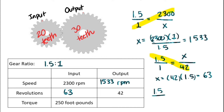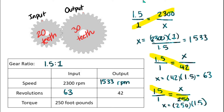Looking at torque: gear ratio equals output torque over input torque. We put input on the bottom. Our output torque is the unknown. X equals 250 times 1.5 divided by 1, giving 375 foot-pounds. Larger gears have more torque.